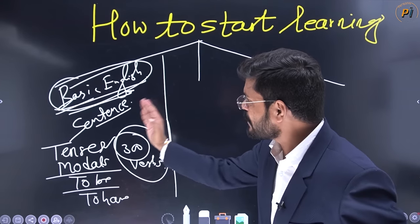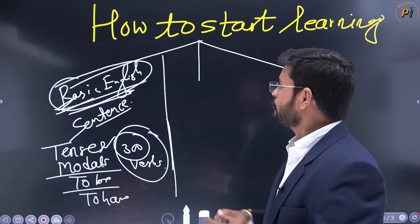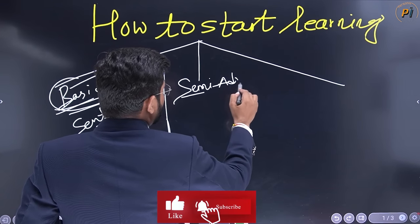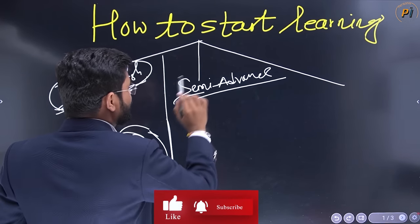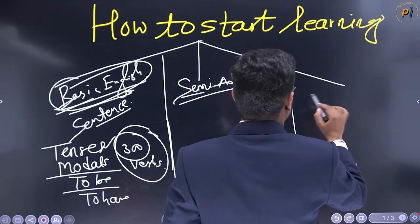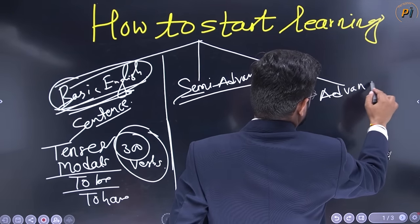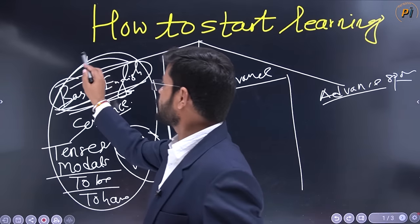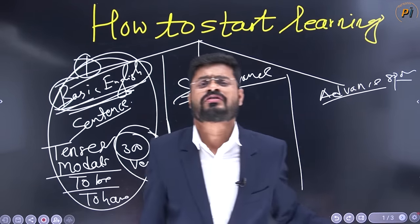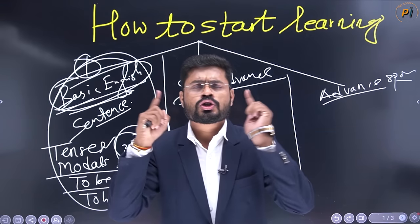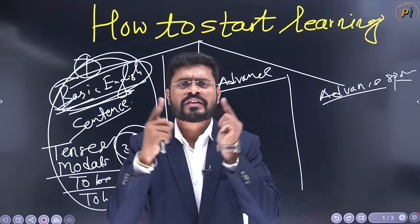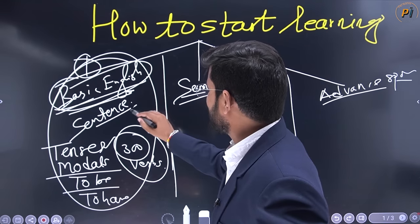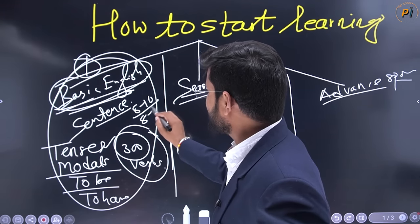And once you complete your basic English, you are ready for the semi-advanced level. This is the second level, and the third level is the advanced English level. First of all, I want to tell you that you need to improve the content in basic English. You need to understand and learn all the sentences. In basic English, you need to learn 8 to 10 prepositions and 8 to 10 conjunctions.